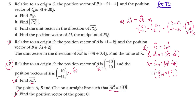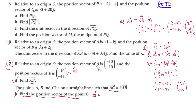Putting the values together: OC equals (minus 10, 10) plus 2 times (20, minus 21). The top is minus 10 plus 40 equals 30, and the bottom is 10 plus (minus 42) equals minus 32. So the position vector of C is the column vector (30, minus 32). We were asked to find OC, and this is our answer. Thanks for watching.